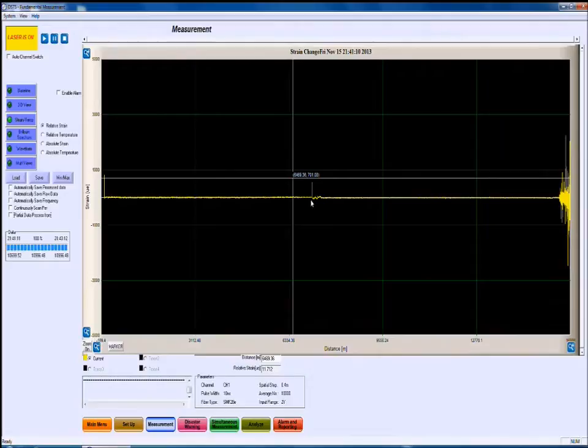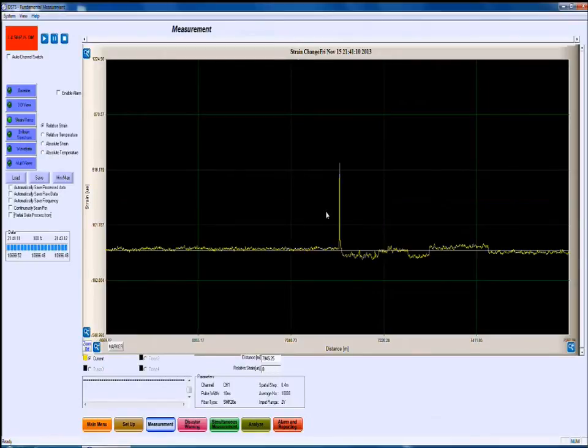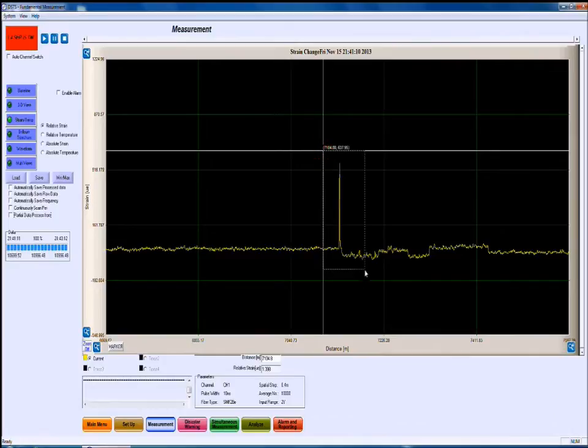So looking right here across our line, we see a very sharp spike at one location. This is where we're applying the strain. By zooming in, you can see how clearly we can actually observe that spike in the signal.